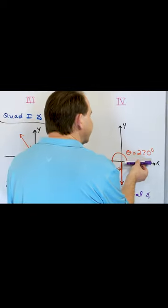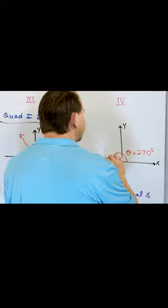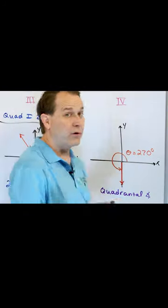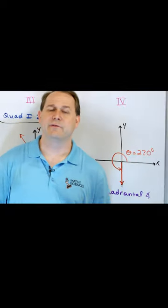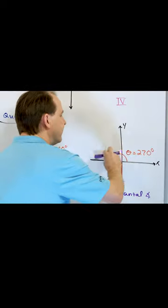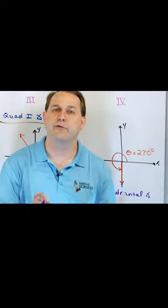If the angle falls on this line, or on this line, or on this line, or on this line, in other words, zero, 90, 180, 270, or even back around to 360 degrees, then it's not in any of those quadrants.